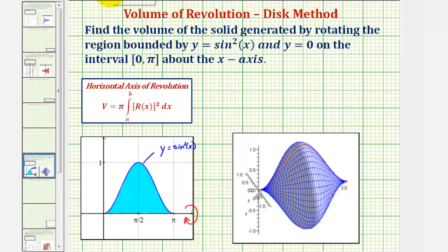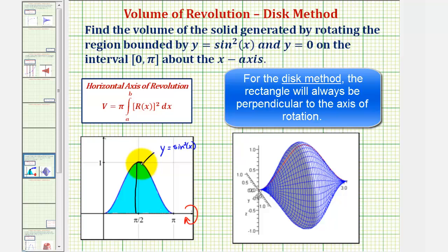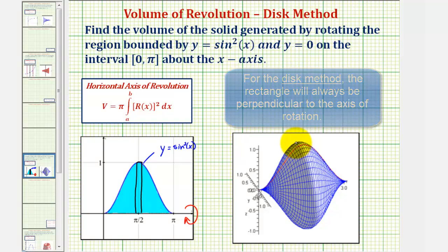When using the disk method, it's helpful to sketch a representative rectangle, where if we were to rotate the rectangle, it would be the approximate volume of one slice of our solid. If we use this rectangle here and rotate it about the x-axis, it would give us a disk that would be the approximate volume of one slice of our solid, maybe this slice here.